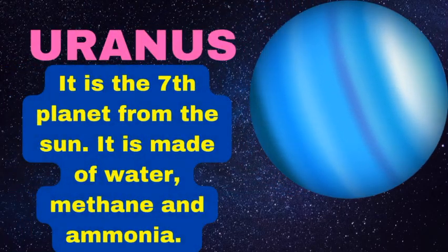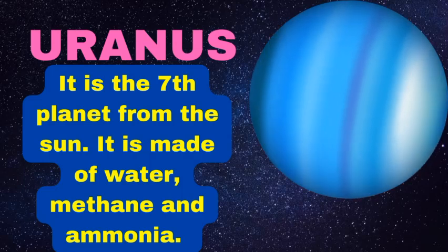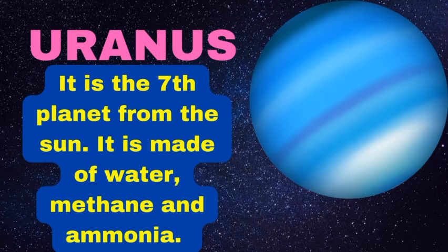Uranus is the seventh planet from the sun and it is made of water, methane and ammonia. Due to presence of water, it is blue in color.